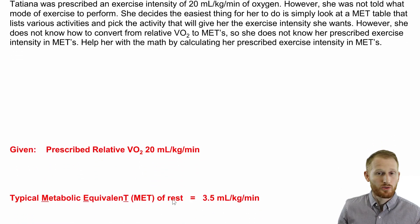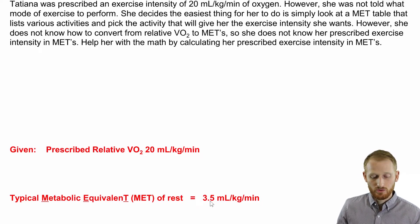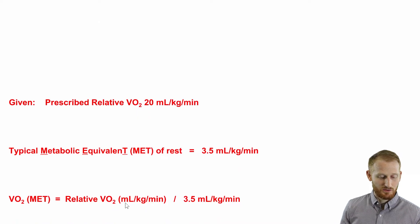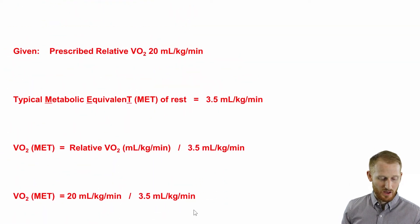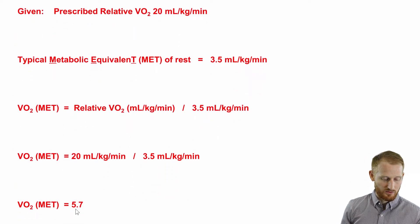This is actually a really simple thing to do. What we're essentially trying to get is the metabolic equivalent of rest, which is what we call MET. One MET is equal to 3.5 milliliters of oxygen per kilogram of body mass per minute, which is that relative VO2 unit we already have. So all we need to do is take our relative VO2 and divide it by 3.5, and it's going to give us our MET level. To plug that in, we have 20 milliliters per kilogram per minute divided by 3.5 milliliters per kilogram per minute.